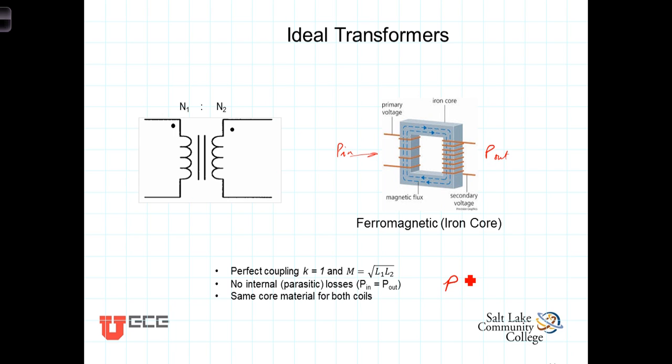As we'll see in the next few videos, these approximations greatly simplify the calculations and the analysis of circuits where the transformer's model is ideal. We're going to find that the relationships between the voltage and current of the primary and the secondary coils then become dependent only upon what is known as the turns ratio, the ratio of N1, the number of turns in the primary, and N2, the number of turns in the secondary.